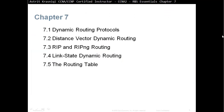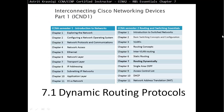Chapter 7 is divided in five sections. We have Section 7.1, Dynamic Routing Protocol, then Section 7.2, Distance Vector Dynamic Routing. Then we move on to Section 7.3, RIP and RIPNG Routing. Section 7.4 talks about Link State Dynamic Routing, and 7.5, the Routing Table. Quite a big chapter. Section 7.1, Dynamic Routing Protocol.